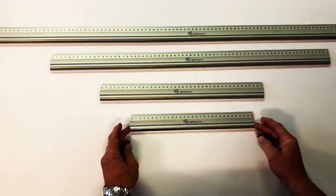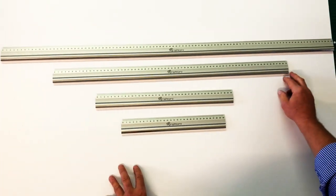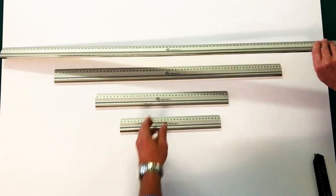Now they come in various sizes. We've got 30, 40, 70, and a meter long ruler.